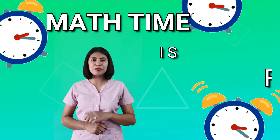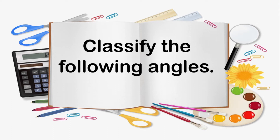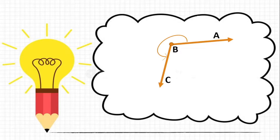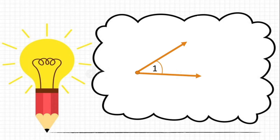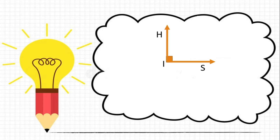Because math time is fun time, let us answer the following. Classify the following angles. Angle ABC is a reflex angle. Angle 1 is an acute angle. Angle HER is an obtuse angle. Angle HIS is a right angle. Great job!